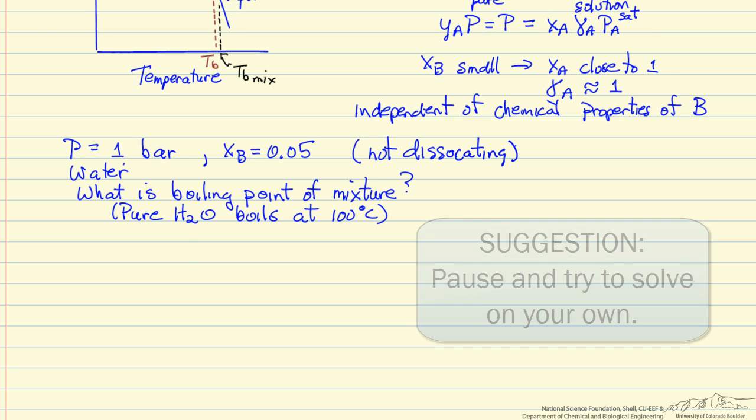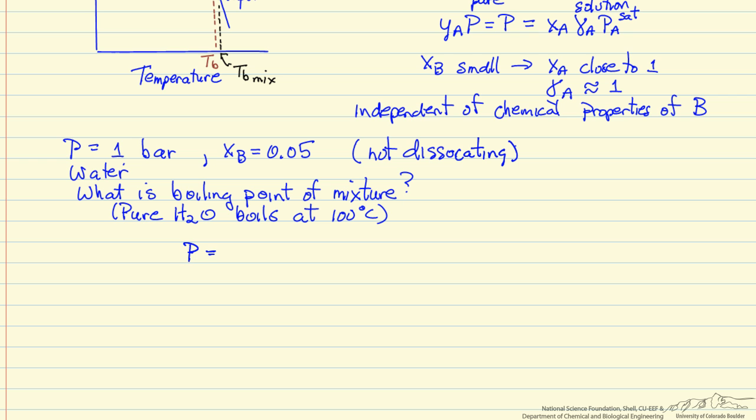If we use Raoult's Law, the pressure is 1 bar equals the mole fraction of A times the saturation pressure. The mole fraction of A is 0.95 if the mole fraction of B is 0.05.